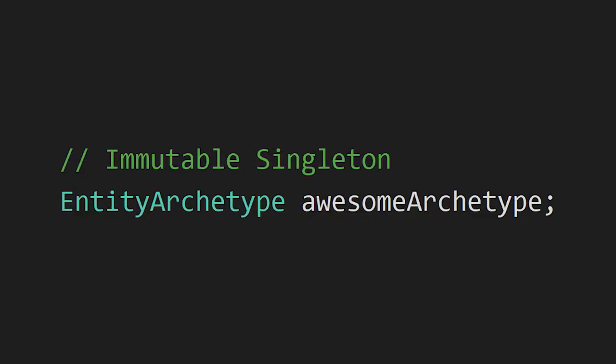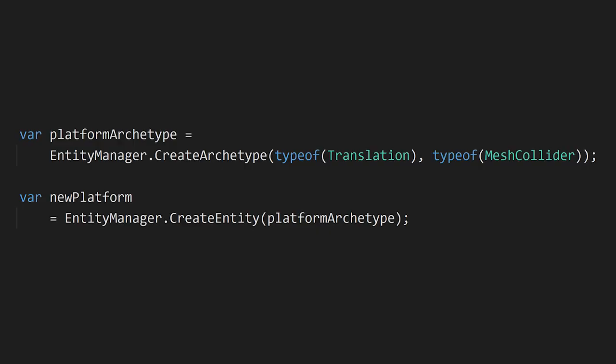Let's talk about some of the options available to us in the API for entity archetypes. I'd highly recommend you check out the documentation to see the full list of properties and functions available. The actual data type is just called EntityArchetype, and it is an immutable singleton. There are ways we can explicitly create entity archetypes by specifying a particular set of components — this component, this component, and so on.